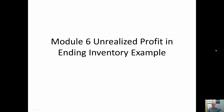In this video we're going to look at two examples around intercompany sales of inventory. In the first example we will look at a situation where all of that intercompany sale was sold to external parties in the same year, and in the next example we'll look at a situation where it was still in inventory and not sold to an external party in the same year as the intercompany sale.